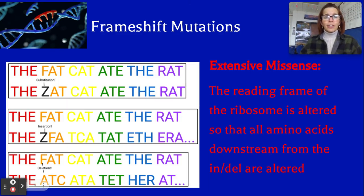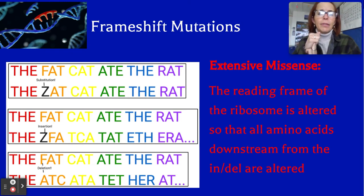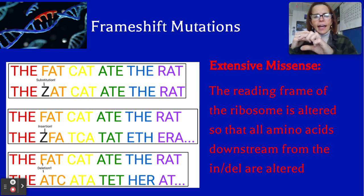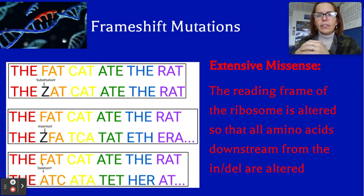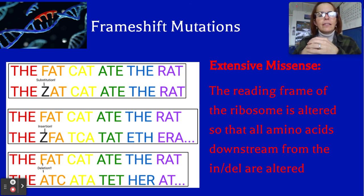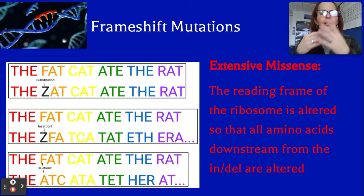Let me give you an analogy using a sentence of three-letter words to show how mRNA is read three letters at a time. The sentence is: 'the fat cat ate the rat.' If we substitute a Z for the F, it now says: 'the zat cat ate the rat.' That's a substitution — it may have changed one amino acid, but the rest of the protein still has the correct amino acids downstream.